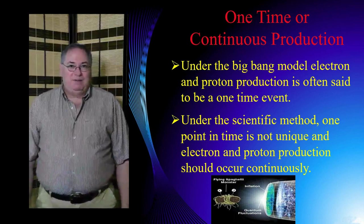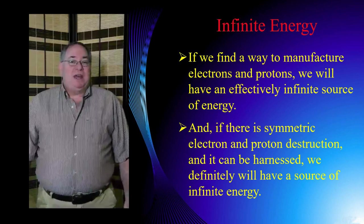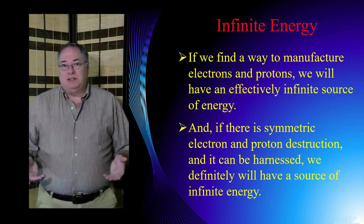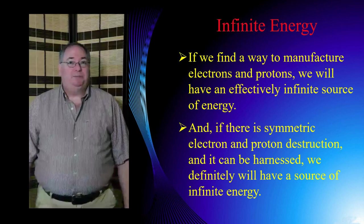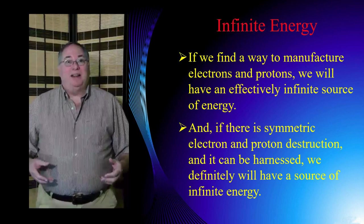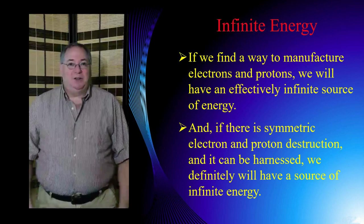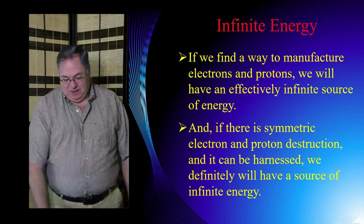So what we have, if we can produce protons and electrons in a relatively reasonable way, is a potential source of infinite amounts of energy. And then if we turn it around and the process is reversible, we could have really infinite energy if we can annihilate protons and electrons with each other and get energy out. It will be equivalent to matter-antimatter energy production in the total amount of energy without having to produce the antimatter.